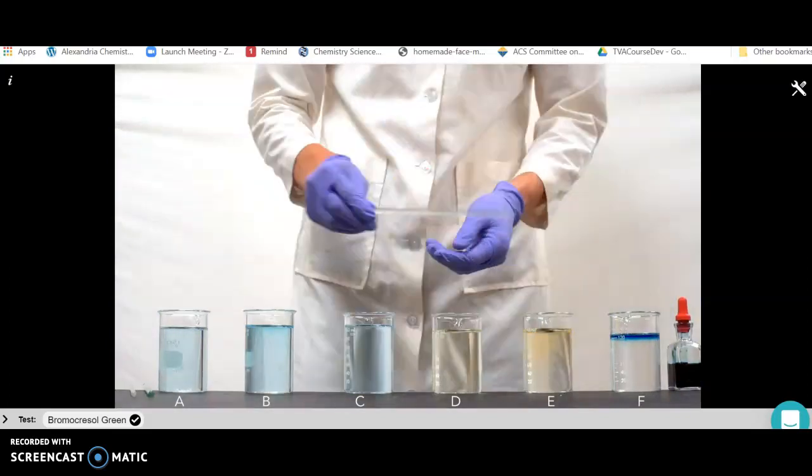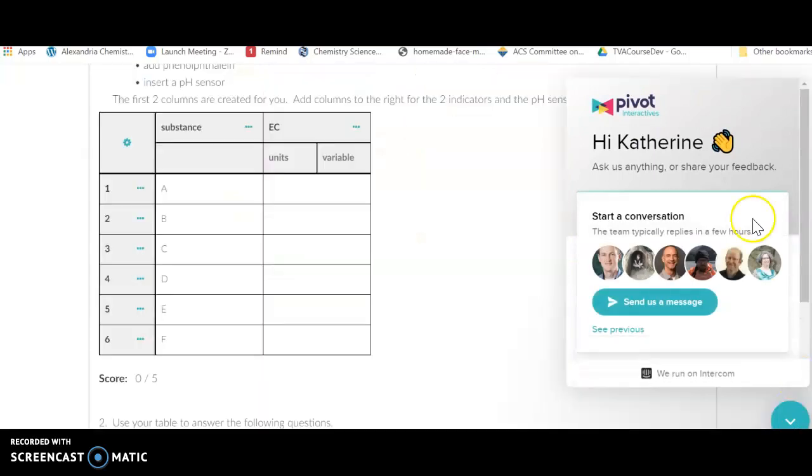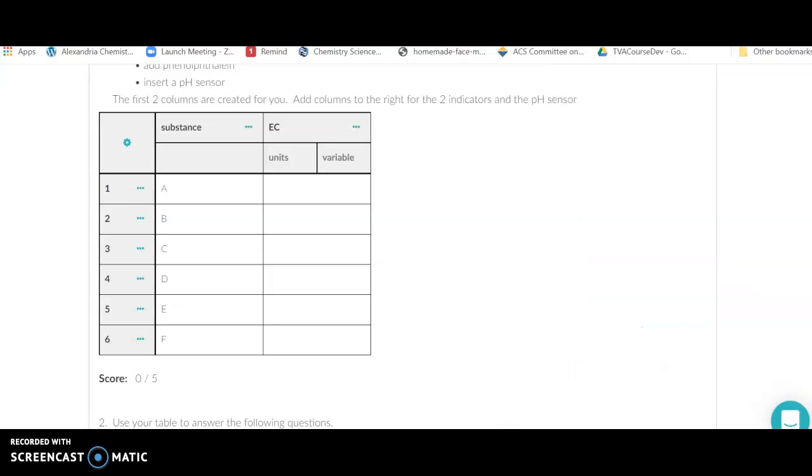You're going to record the results as you see them. For example, on this one here, we viewed the color as we added the indicator. You're going to create some columns for your substances and for what you're going to do.